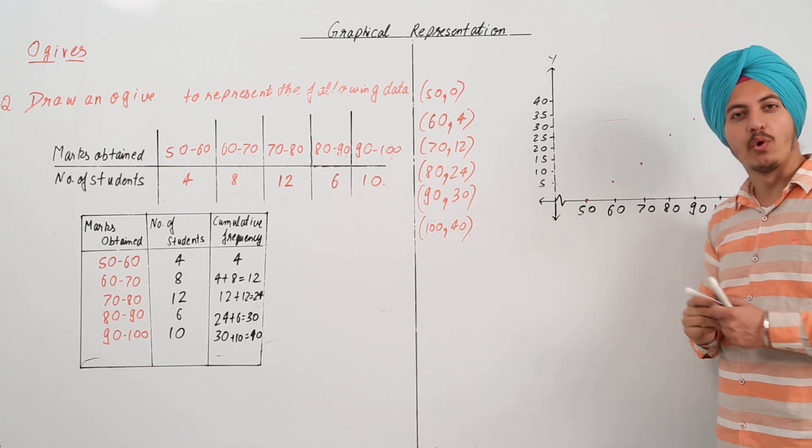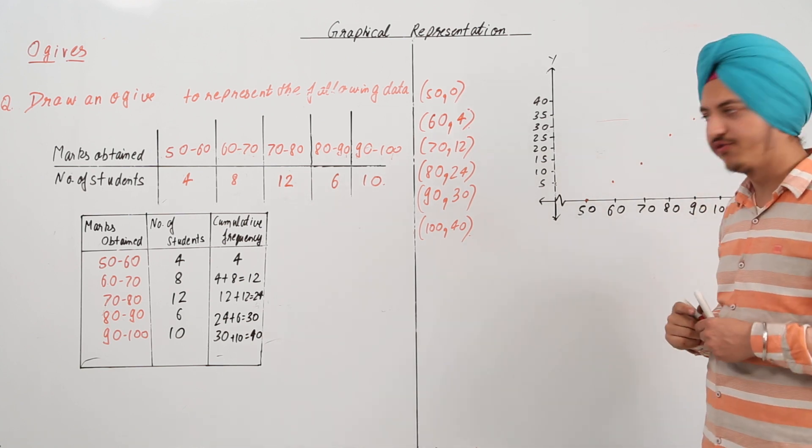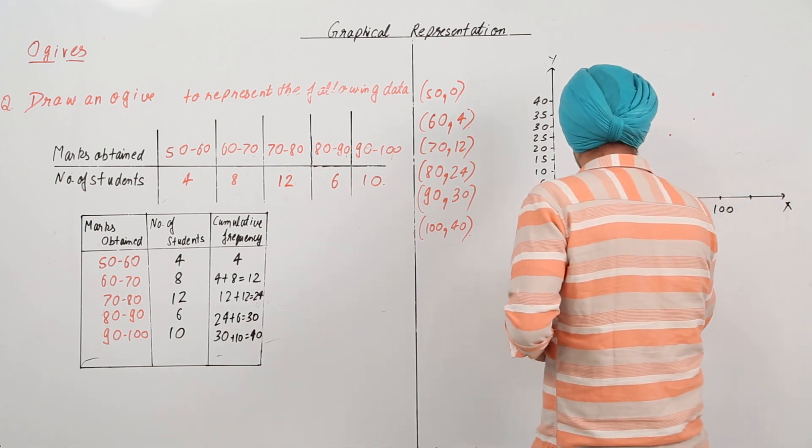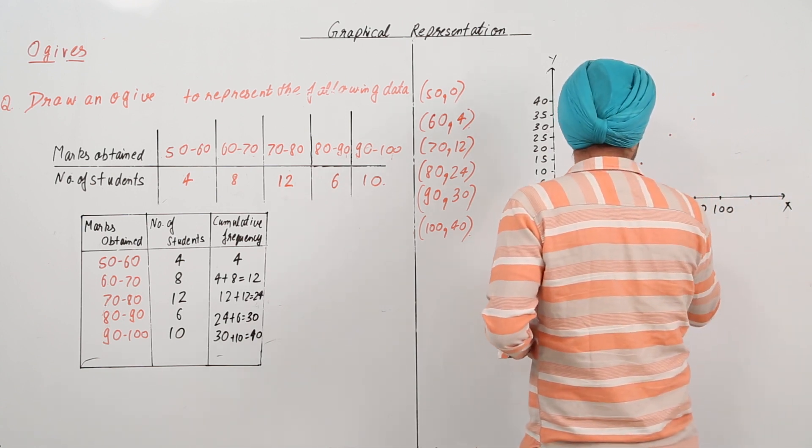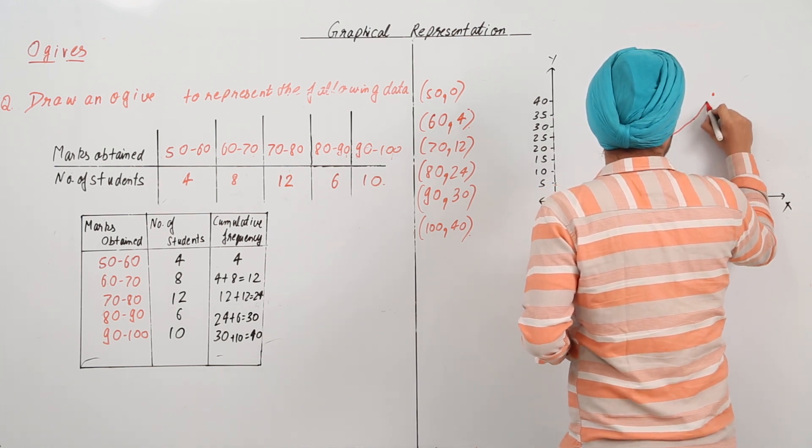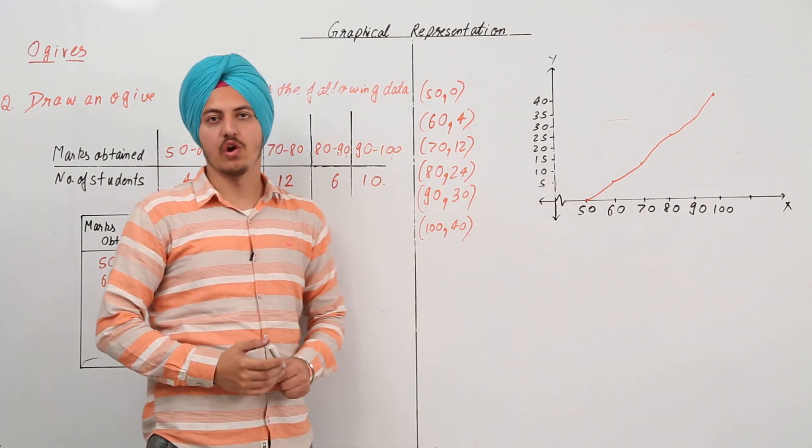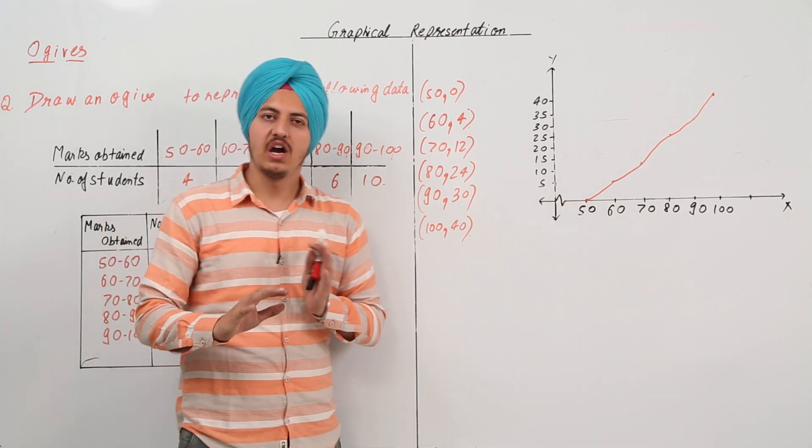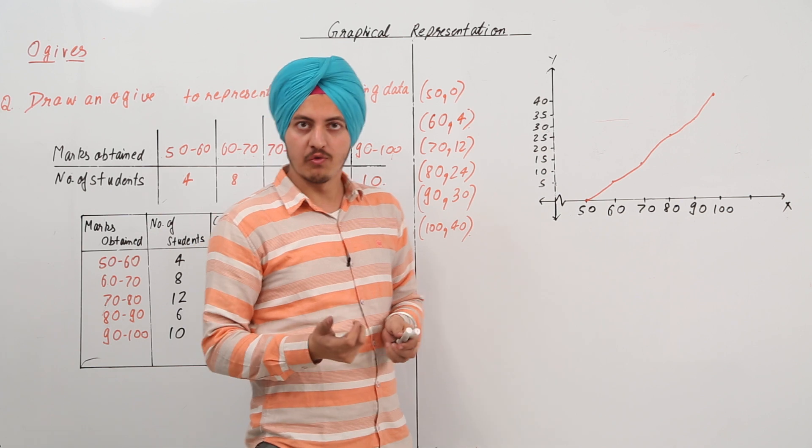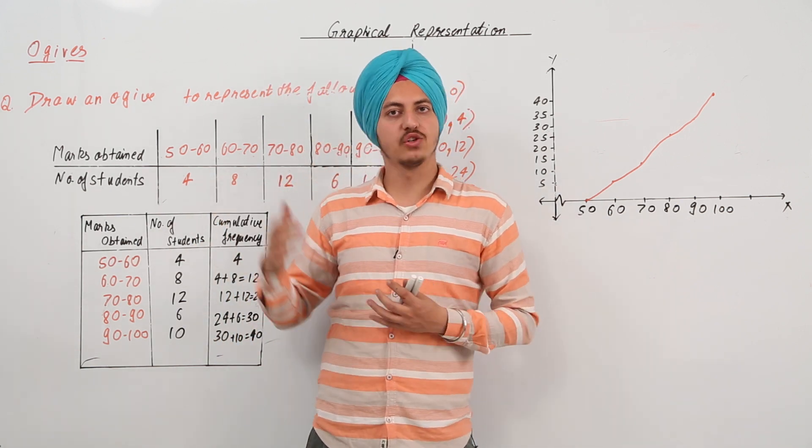So, these are the points that we get. All now we have to do is just join them with a free hand. So, again, very simple and you know what to do if you get a discontinuous data.